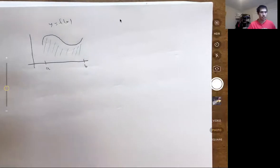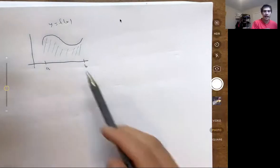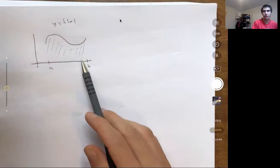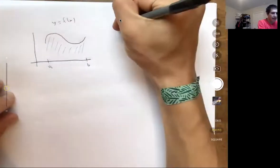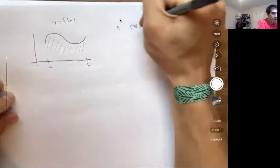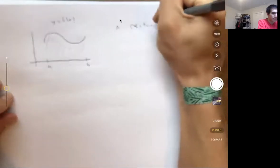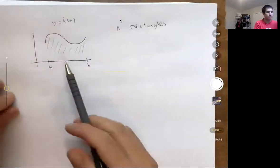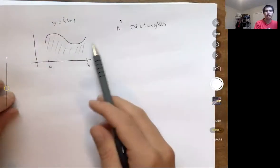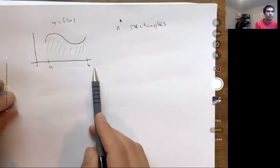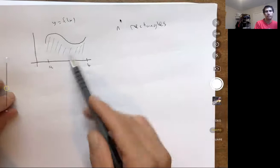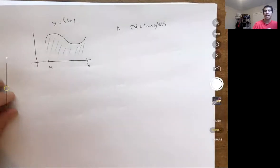The goal of this video is to approximate the area under this curve using n rectangles. I'm going to assume that this curve is always positive — the function is always above the x-axis — and I'm going to approximate the area between x equals a and x equals b, this shaded region, using n rectangles.